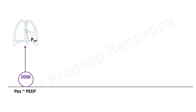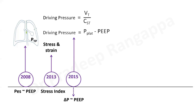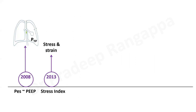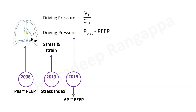In 2013 there was discussion on stress and strain index. Then in 2015 a very important step came: the driving pressure. All listeners know we now focus more on driving pressure because it takes P-plat and PEEP optimization together, and maintaining driving pressure less than 15 has an important correlative effect on outcomes and mortality. Mechanical power is an extension of driving pressure — it takes more variables.